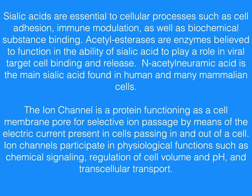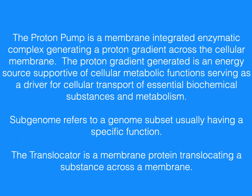N-acetylneuraminic acid is the main sialic acid found in humans and many mammalian cells. The ion channel is a protein functioning as a cell membrane pore for selective ion passage by means of the electric current present in cells, passing in and out of a cell. Ion channels participate in physiological functions such as chemical signaling, regulation of cell volume and pH, and transcellular transport. The proton pump is a membrane-integrated enzymatic complex generating a proton gradient across the cellular membrane. The proton gradient generated is an energy source supportive of cellular metabolic functions, serving as a driver for cellular transport of essential biochemical substances and metabolism. Subgenome refers to a genome subset usually having a specific function. The translocator is a membrane protein translocating a substance across a membrane.